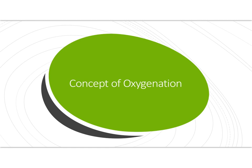We're going to get started on the concept of oxygenation. This concept is probably one of the most important concepts that you will learn while in nursing school. All organs and tissues need a steady supply of oxygen in order to survive, and so it is important that you understand what is in this chapter.